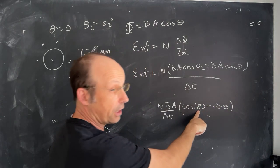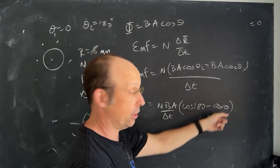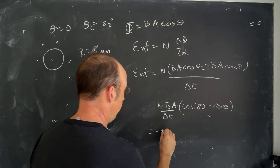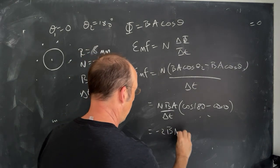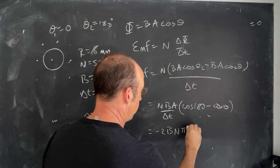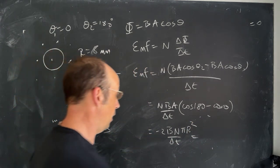So the cosine of 180 is negative 1, the cosine of 0 is 1. So it's going to be minus 2. So I get negative 2, which I don't really care about, B, and the area is going to be pi R squared over delta T. So let's plug in our stuff. Let's put in the numbers.